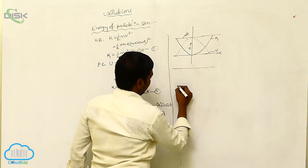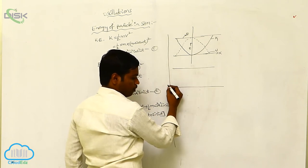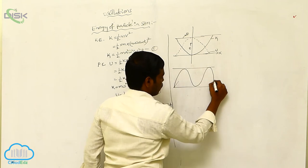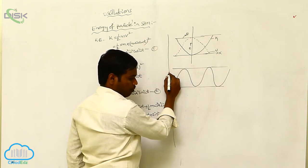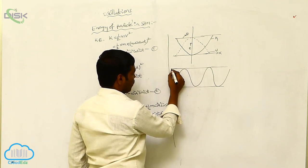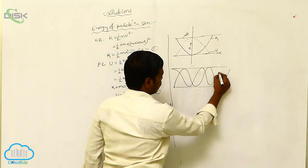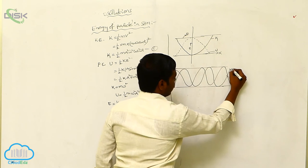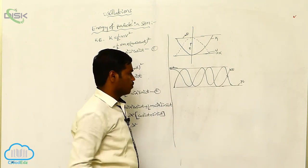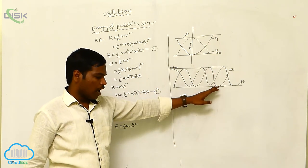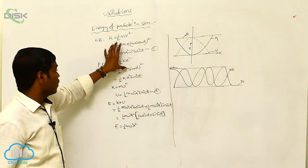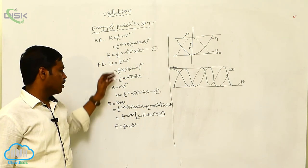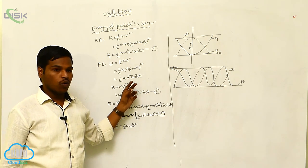We can draw another graph showing kinetic energy and potential energy. This is the potential energy, this is the kinetic energy, and this is the total energy value. This graph is between energy and displacement. Simply, the total energy of the particle executing simple harmonic motion is the sum of kinetic energy and potential energy — if we add these two energies, we get the total energy of the particle.